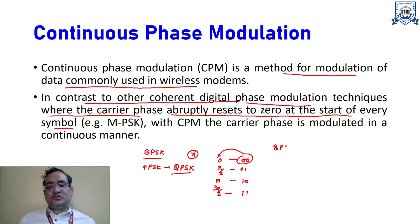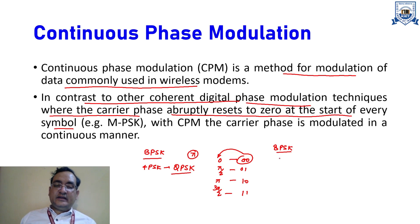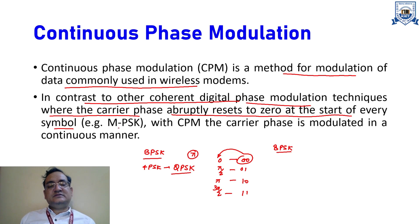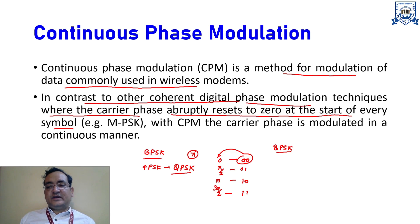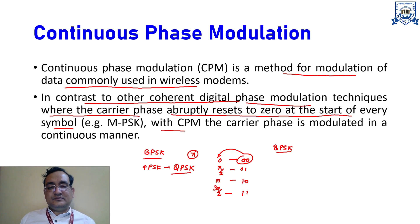For 8PSK there should be three bits in one symbol, meaning eight total symbols and eight phase differences are possible. In general, MPSK means the phase is continuously changing, and at the start of every symbol it resets to zero. With CPM, however, the carrier phase is modulated in a continuous manner.